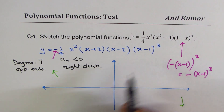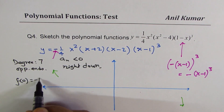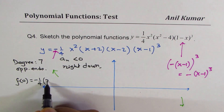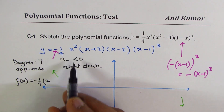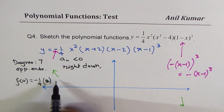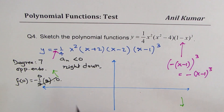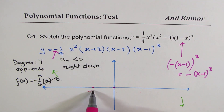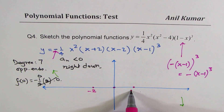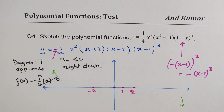Let us also calculate the y-intercept. The value of the function at x = 0: since x squared is a factor, plugging in 0 gives 0, so the graph passes through the origin. The zeros are: 0 (order 2), minus 2 (order 1), plus 2 (order 1), and plus 1 (order 3).